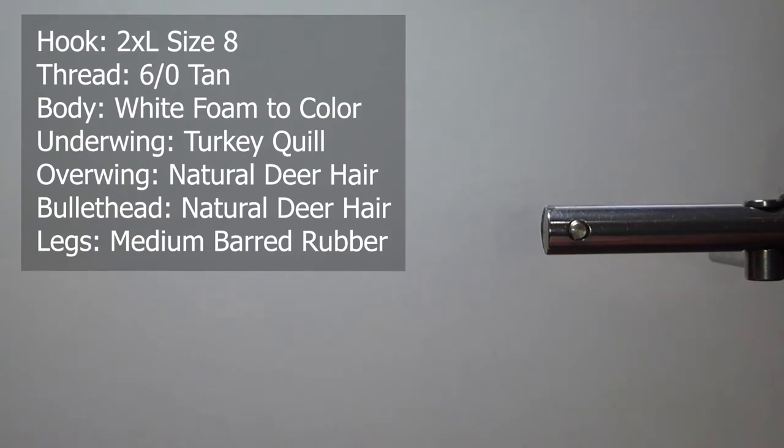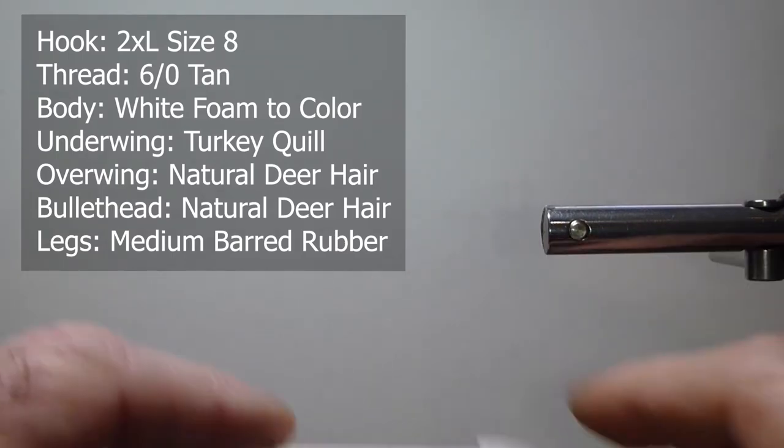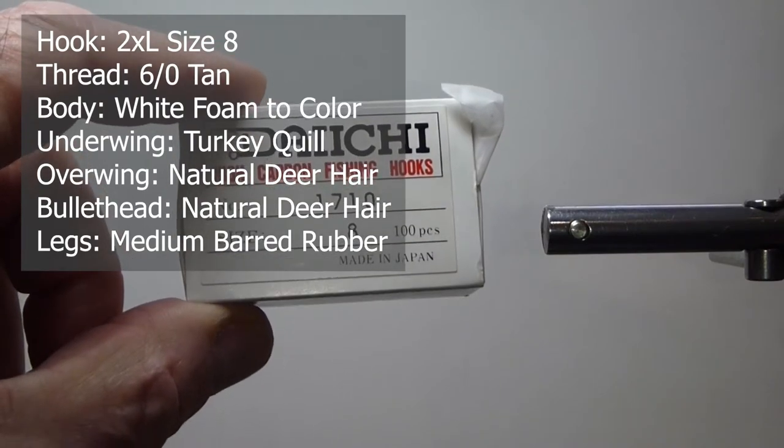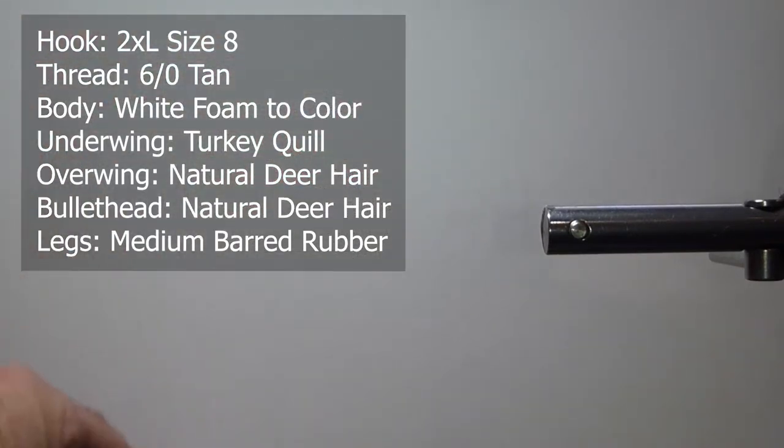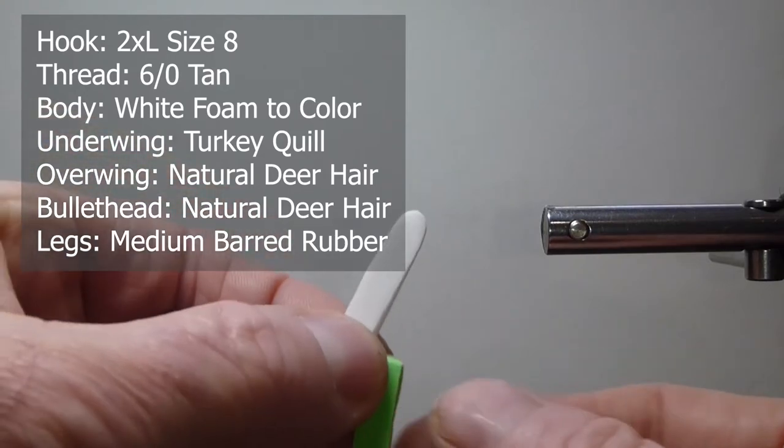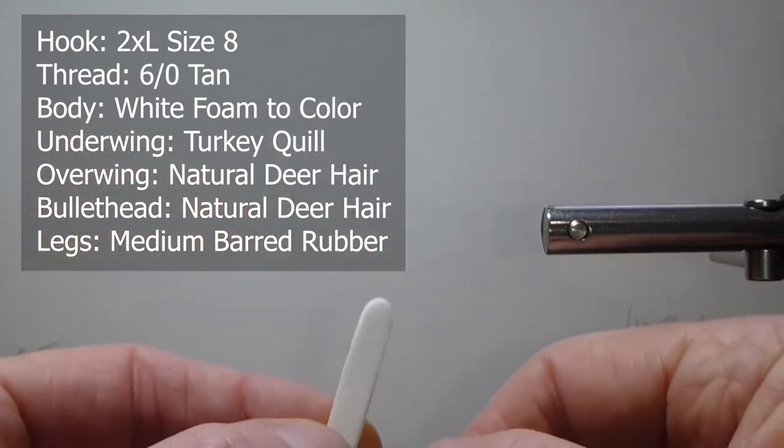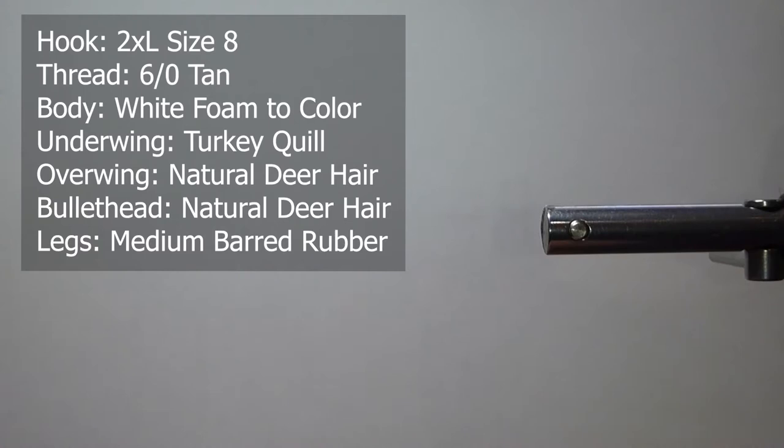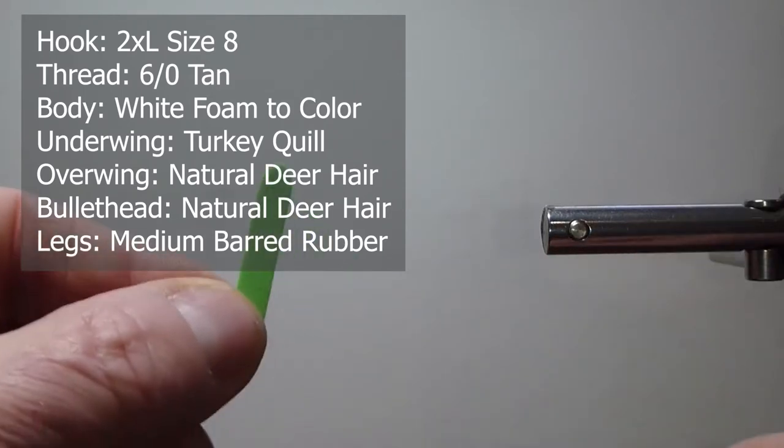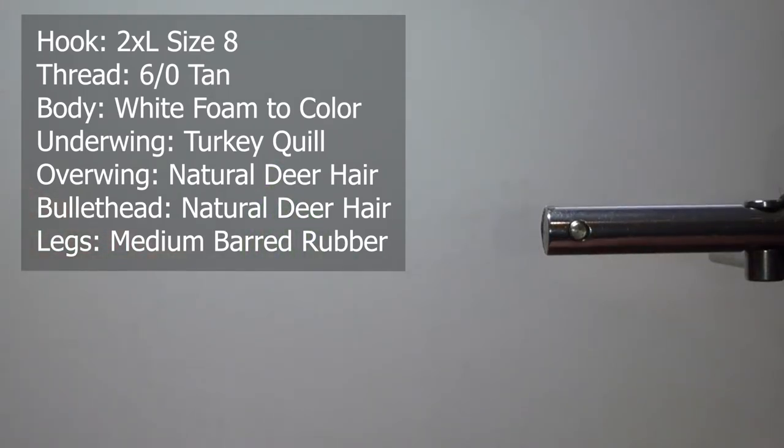So we're going to get started here with the materials. I'm going to use a 1710, it's a 2X long, size 8 hook. For the body I'm going to use some cut foam. I just build these all myself with foam cutters. You can buy them already packaged and cut, ready to go.